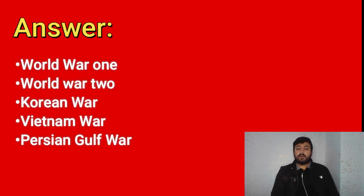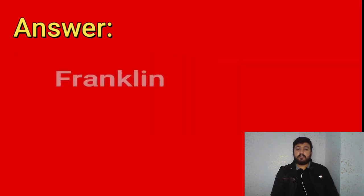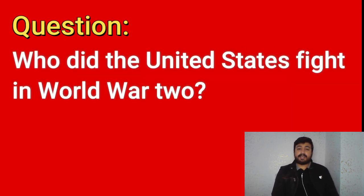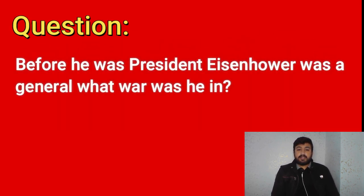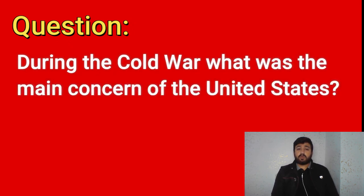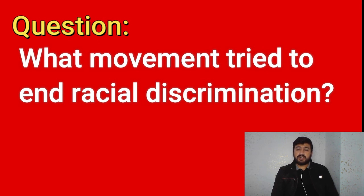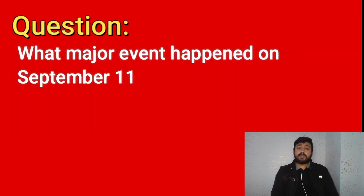Name one war fought by the United States in the 1900s: World War I, World War II, Korean War, Vietnam War, Persian Gulf War. Who was president during the Great Depression and World War II? Franklin Roosevelt. Who was president during World War I? Woodrow Wilson. Who did the United States fight in World War II? Japan, Germany, and Italy. Before he was president, Eisenhower was a general — what war was he in? World War II. During the Cold War, what was the main concern of the United States? Communism. What movement tried to end racial discrimination? The civil rights movement. What did Martin Luther King Jr. do? Fought for civil rights. What major event happened on September 11, 2001 in the United States? Terrorists attacked the United States.